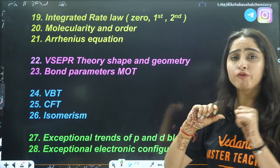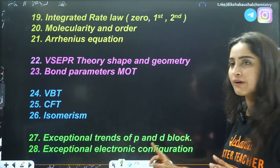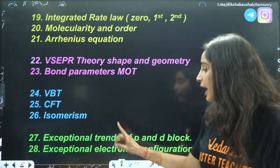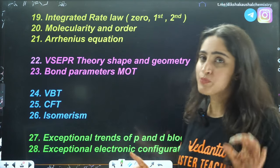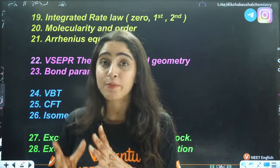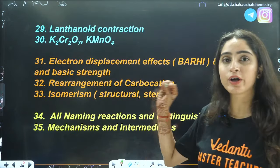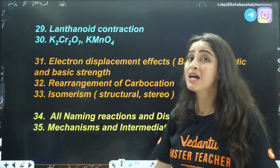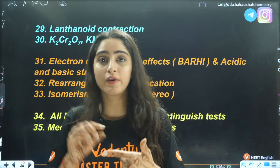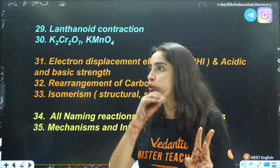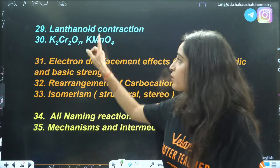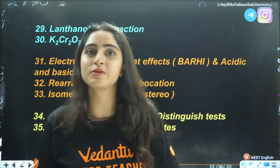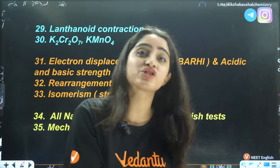From block chemistry, the most important things are: exceptional trends in P block and D block — size, energy, oxidation states; exceptional electronic configurations, especially of F block and some D block elements; and lanthanoid contraction, which can appear in assertion-reasoning questions. Very important: K₂Cr₂O₇ and KMnO₄ — all reactions mentioned in your NCERT. I have covered the D and F block with NCERT line by line across 3 lectures — go through those in detail.